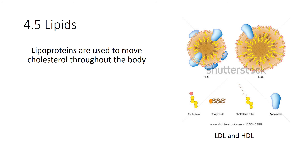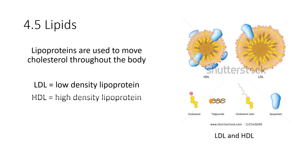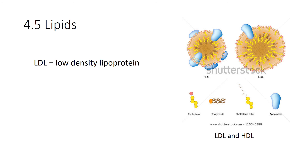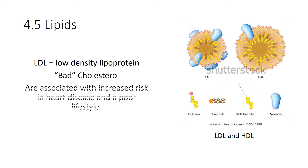There are several different types of lipoproteins, but broadly speaking there's LDL — low-density lipoprotein — and HDL — high-density lipoprotein. LDLs are what we call the bad cholesterol, and they're associated with increased risk of heart disease and poor lifestyle. If you're not exercising and eating a lot of processed food like hamburgers, french fries, and pizza, you're going to have higher LDL levels. These are associated with people who are often obese, have more risk of heart attacks, and basically don't live as long.